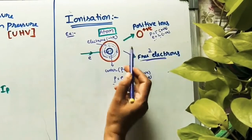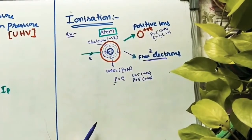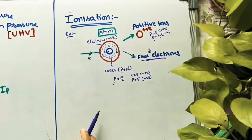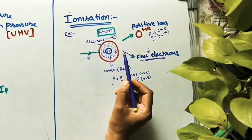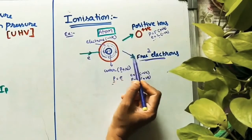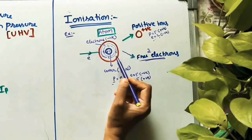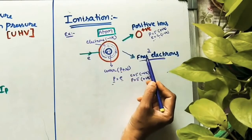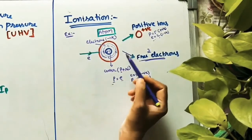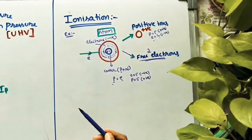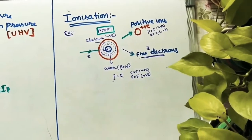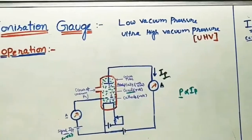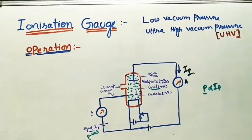Because of this striking of the electron, positive ions and free electrons are produced. This process is called ionization. Ionization is the process of knocking off or removing the electrons from an atom, thus producing free electrons and positive ions. This is the working principle in our ionization gauge.